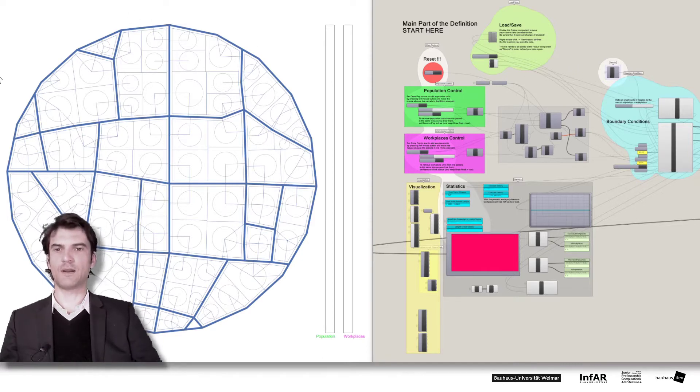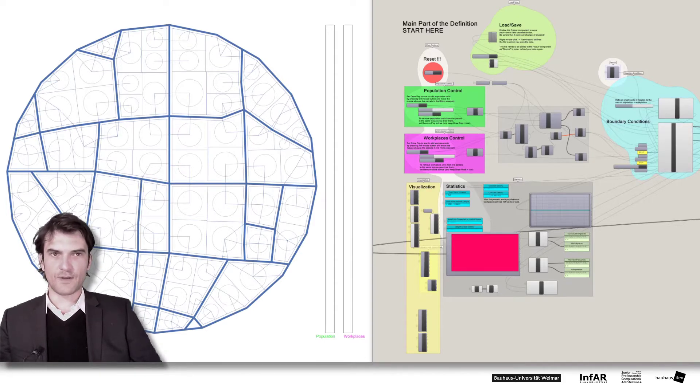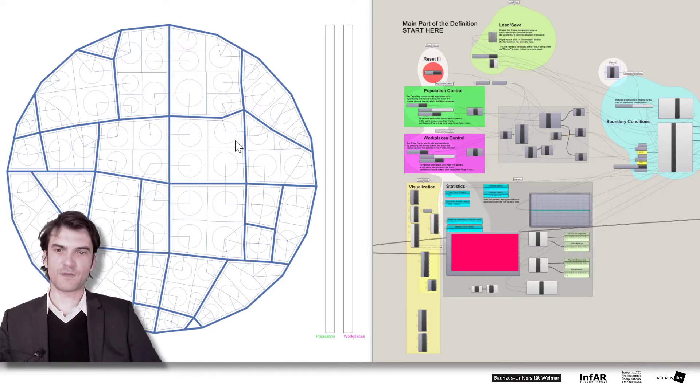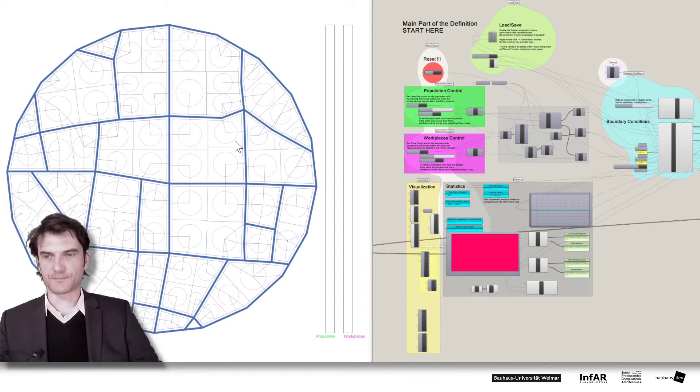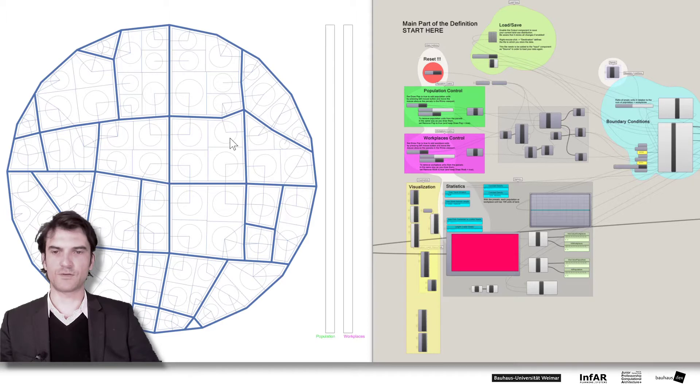So what you see here on the left hand side, that's our circular city. You should know it already from the other exercises. Here we have the plots inside our network and in each plot you see these circles. They will be used to show you how many units we place inside a plot. That's a kind of chart giving you the amount of population units or workplace units in a plot.